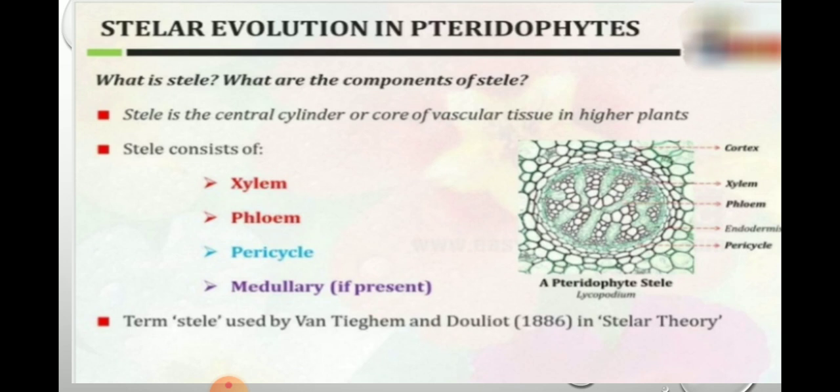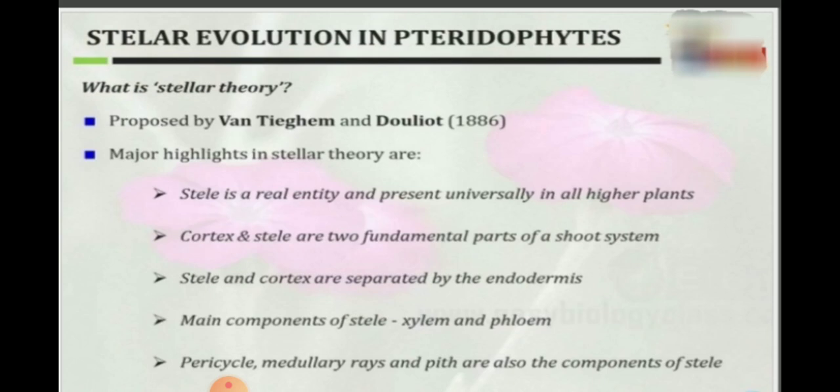Stele consists of xylem, phloem, and pericycle. The Stelar Theory was proposed by Van Tieghem and Douliot in 1886. The major highlights of Stelar Theory are: Stele is universally present in all higher plants.